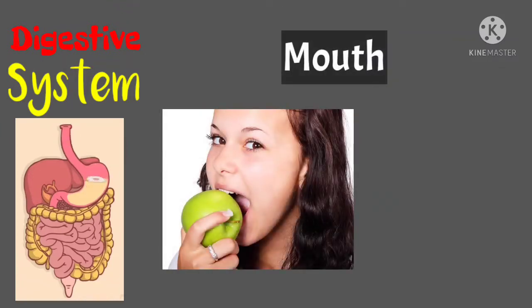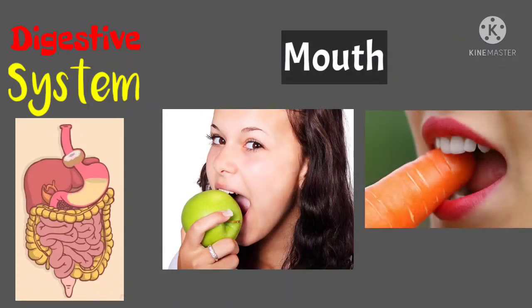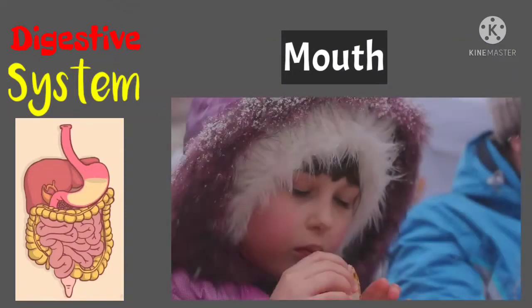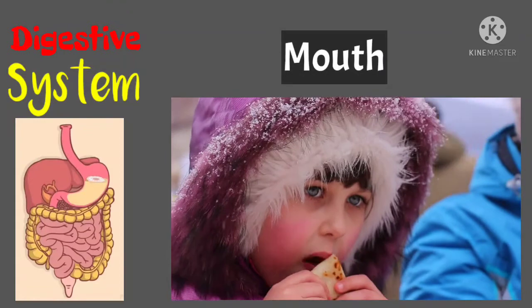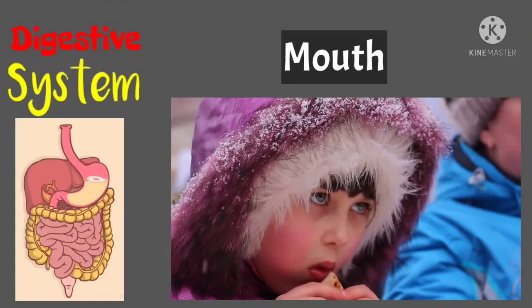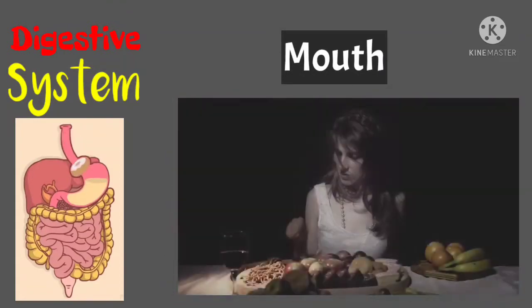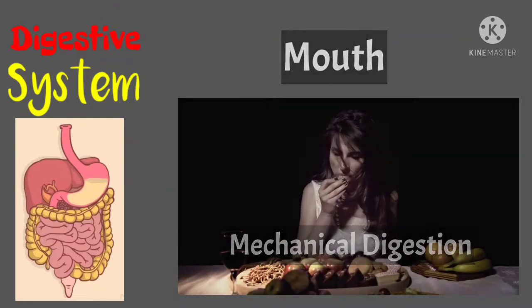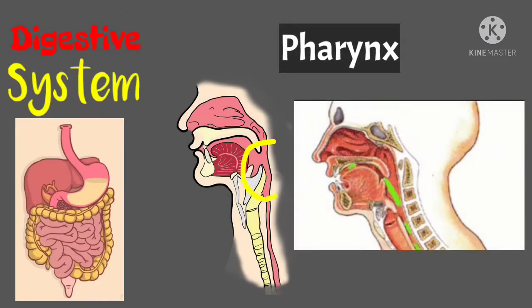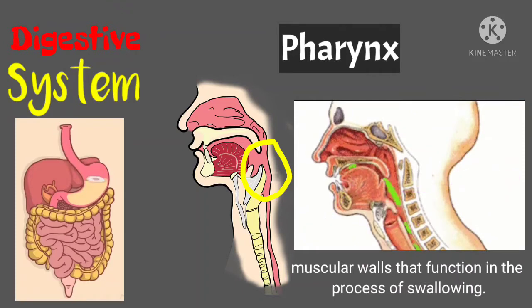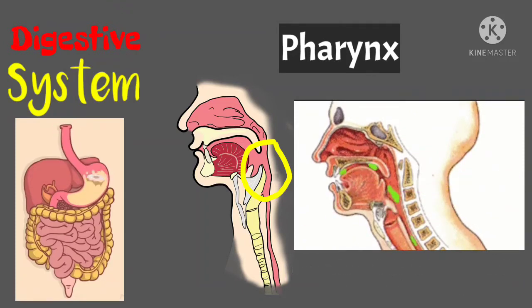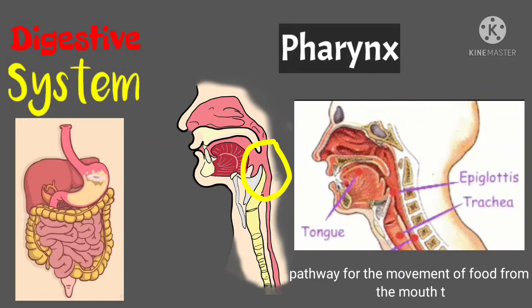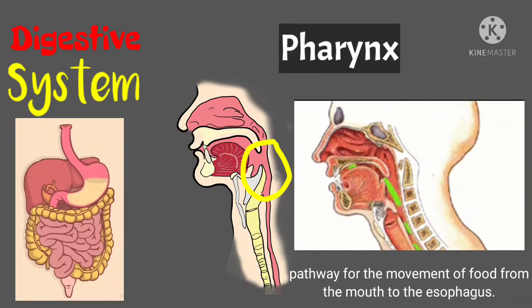Let's start with the mouth. Digestion in humans starts in the mouth, where food is chewed and broken down into smaller pieces for easier digestion. This is called mechanical digestion. Next is the pharynx — a muscular wall that functions in the process of swallowing.